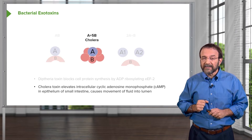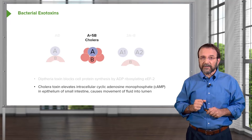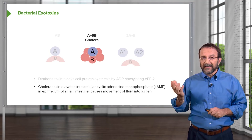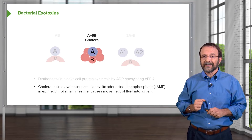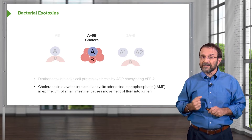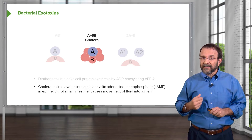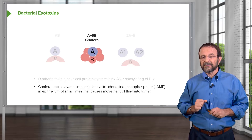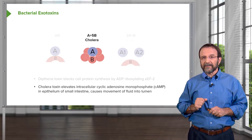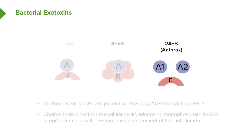Cholera toxin is composed of a single A subunit and five B subunits. This toxin elevates intracellular cyclic adenosine monophosphate in the epithelium of the small intestine, causing movement of fluid into the lumen and the classic diarrhea associated with cholera. The anthrax toxin — the highly lethal anthrax toxin — is composed of two A subunits and a B subunit, and again the B subunit binds the cell receptor.